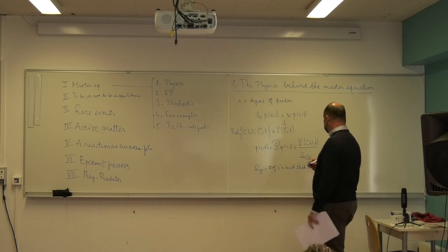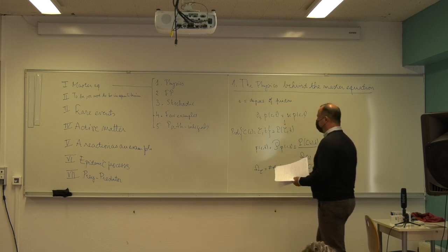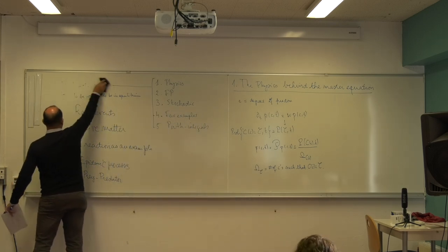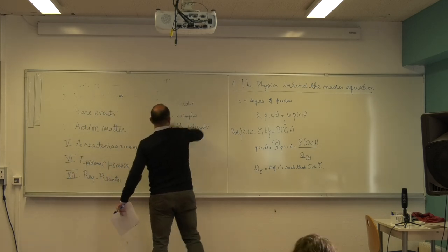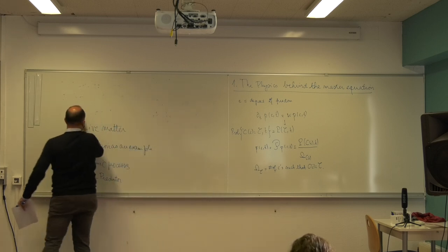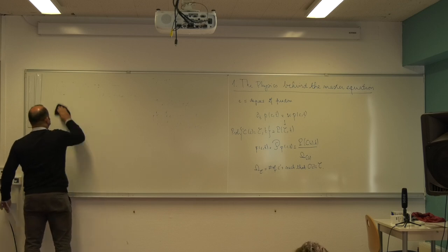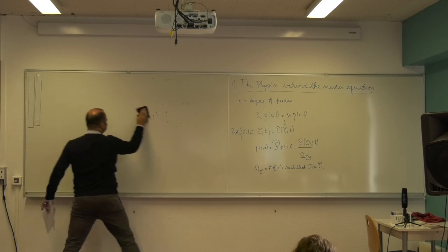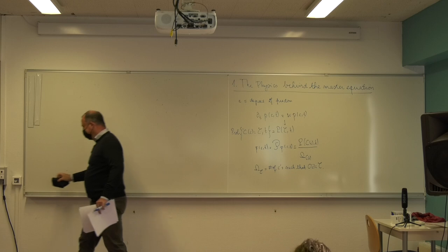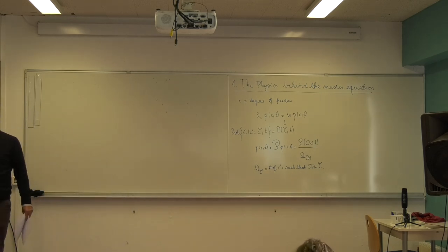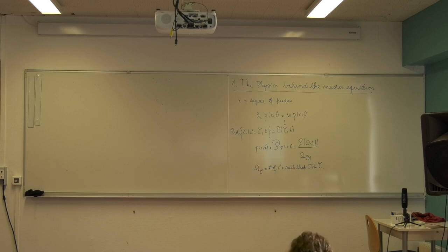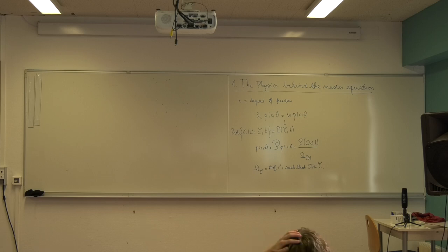I will not go very deeply into projection techniques — I will just tell you how it works, because these are not often used except maybe in mode coupling theory. The trick, if you want to access the reduced probability, is to introduce some auxiliary quantity. This is defined by this probability divided by the number of ways you can get the configuration. Capital C(C) is the number of c's such that C(c) equals the calligraphic C. That's a lot of C's — I hope you can find your way through them.